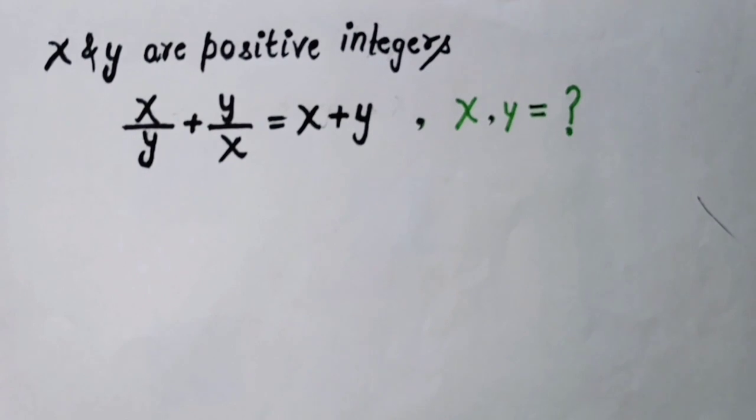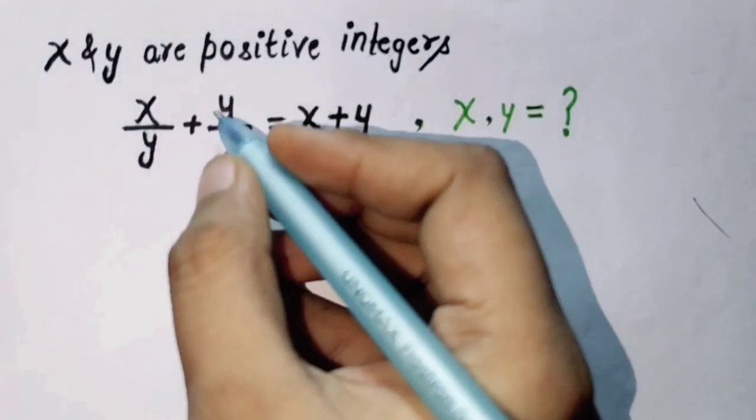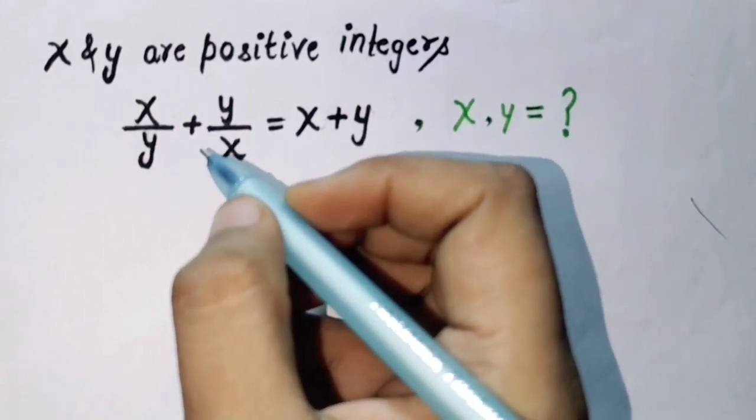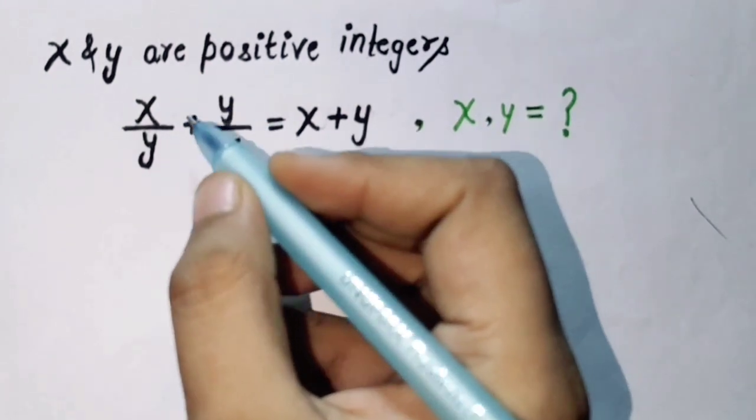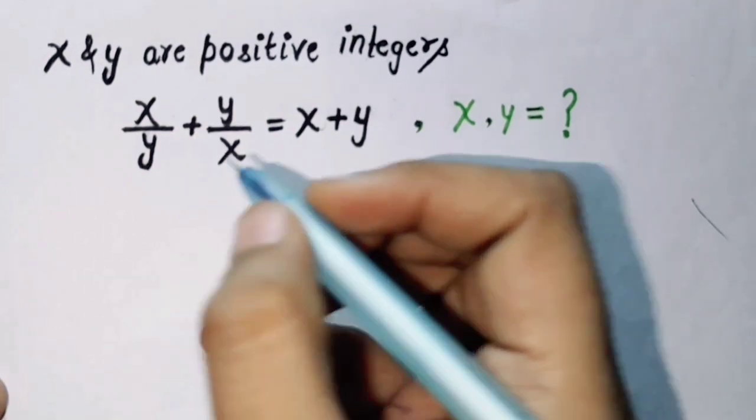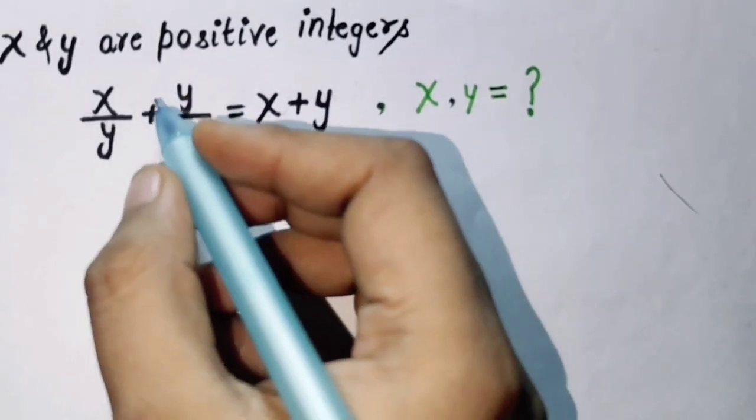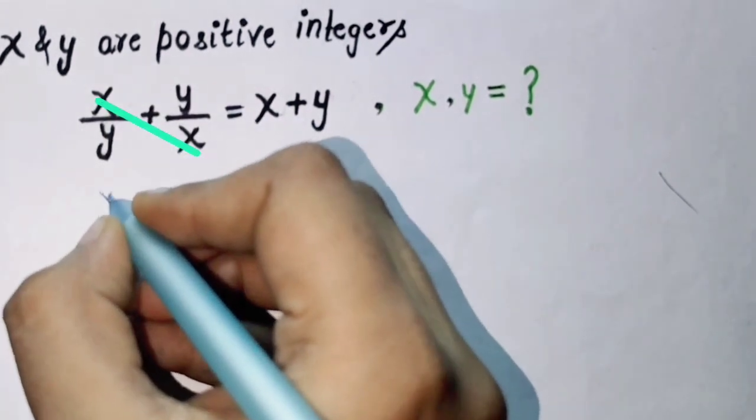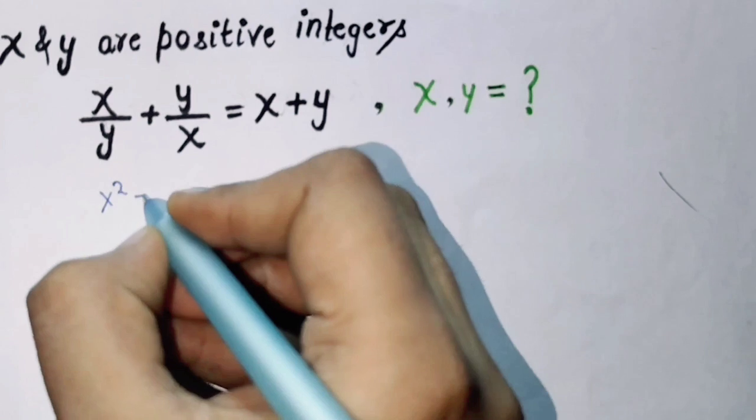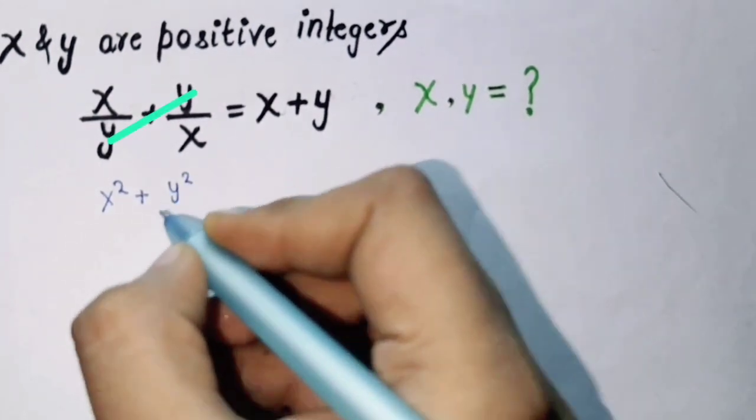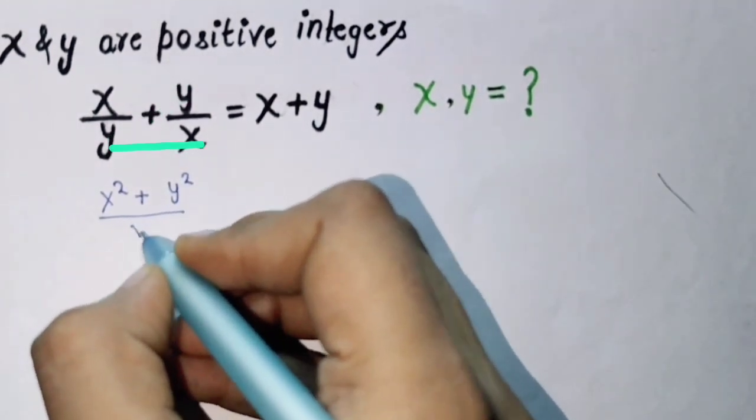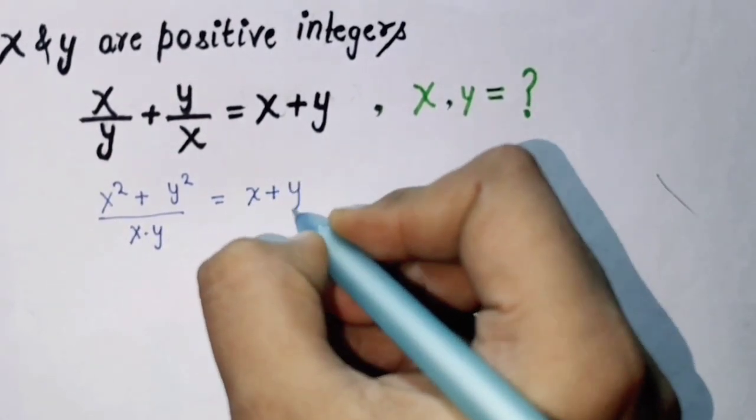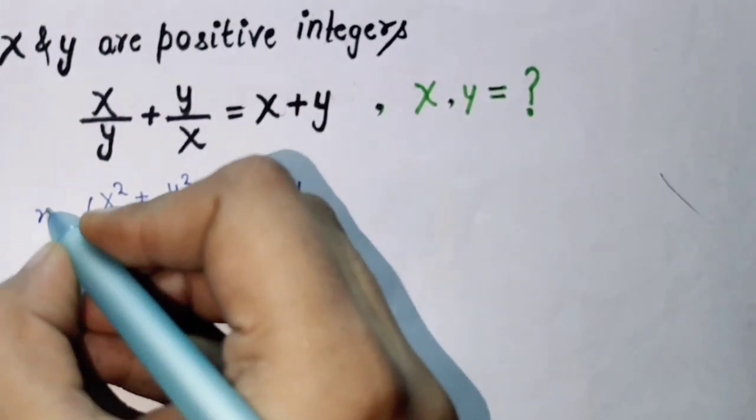First thing, this left-hand side, these two rational numbers we are going to add by crisscross method. So we apply the crisscross method: this x times x, x squared, plus y times y, y squared, over x times y equals this left-hand side as it is. Both sides multiply x times y.